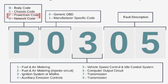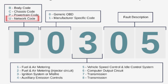Powertrain codes indicate problems with the engine, fuel system, or ignition. Chassis codes relate to the brakes or suspension. Body codes refer to various components like windows, doors, and airbags. Network communication codes point out issues with the car's communication system.